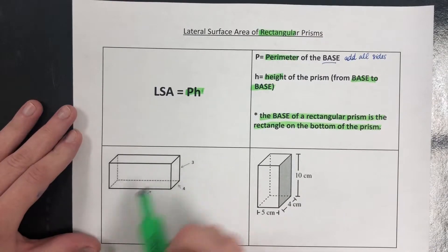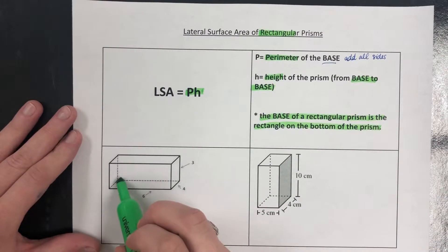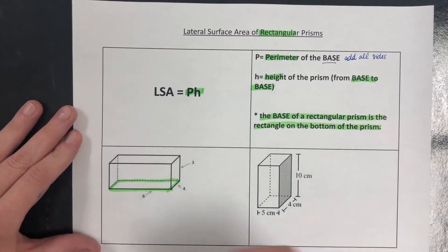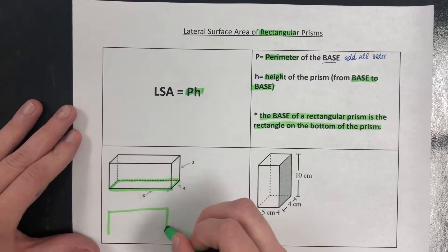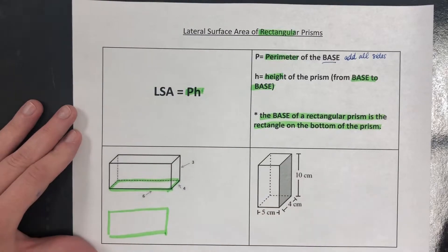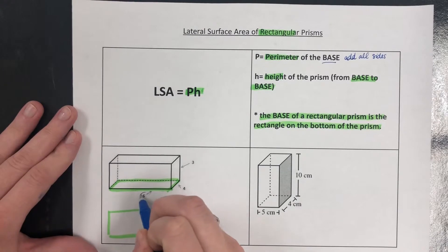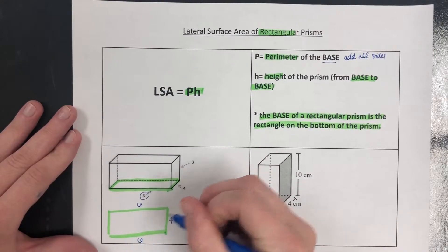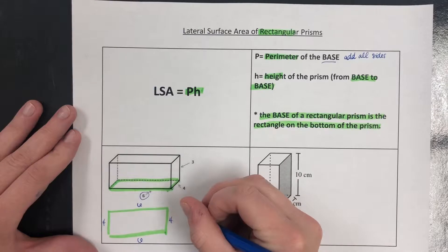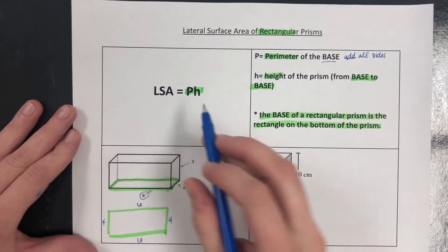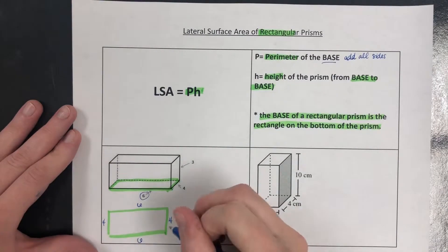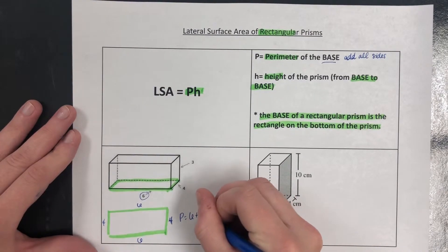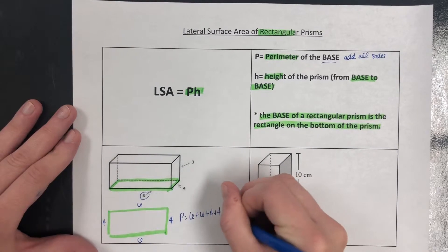Just like before, it's very important to recognize what your base is because we still need the perimeter of that base. When we're looking at this rectangular prism, the base is the rectangle on the bottom. We have highlighted that base. Now we'll redraw. The front of that rectangle is six, which means the opposite side is six. The short side is four, that means the opposite side is four. Since our formula is only PH, the perimeter of the base is going to come from this shape that we redrew, so we're just going to add all the sides together: six plus six plus four plus four.